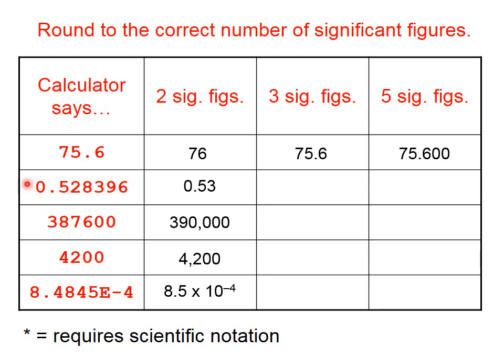That decimal point means that zeros on the right are significant. What about this quantity to three significant figures? Well, it's going to be 0.528.